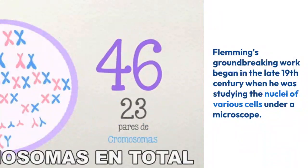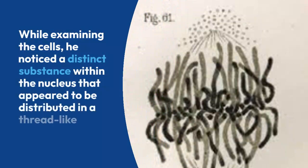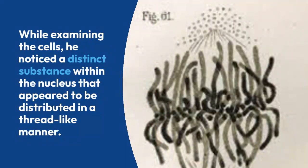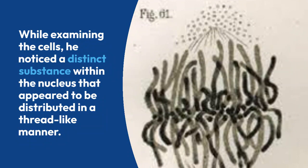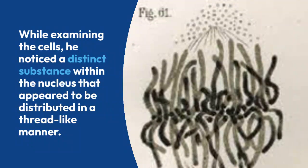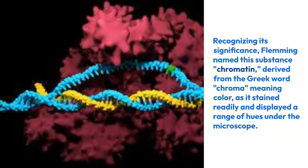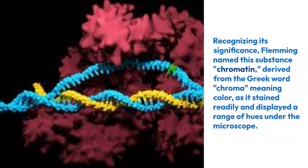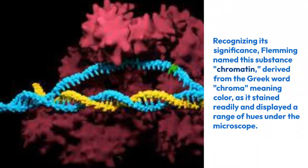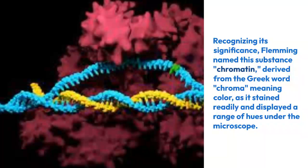Fleming's groundbreaking work began in the late 19th century when he was studying the nuclei of various cells under the microscope. While examining the cells, he noticed that a distinguished substance within the nuclei appeared to be distributed in a thread-like manner. He named this thread-like substance chromatin, derived from the Greek word 'chroma,' meaning color, as it stains readily and displays a wide range of colors under the microscope. Today we know this as chromosome.